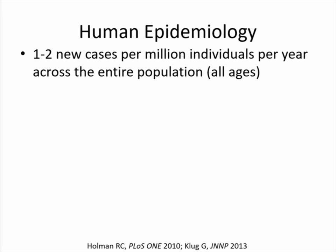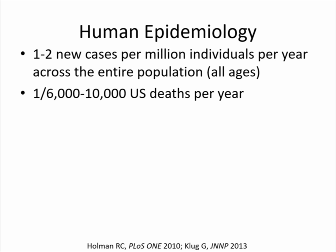Perhaps a better way to frame how common the disease is, is to look at how many deaths per year occur in the U.S. due to prion disease. About one in every 10,000 U.S. deaths are due to prion disease. That's not a common disease, but certainly not as rare as the one-in-a-million number suggests. When you go to your legislators on Monday, I'd advocate using the one-in-10,000 deaths statistic rather than the one-in-a-million incidence number.